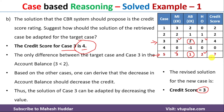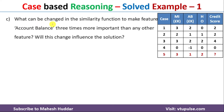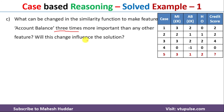Now we answer the third question: what can be changed in the similarity function to make the account balance feature three times more important than any other feature, and will this change influence the solution? In the previous case, w_i = 1 for all features — monthly income, account balance, and homeowner. Now we assign weight for account balance equal to 3, while monthly income and homeowner remain at 1.